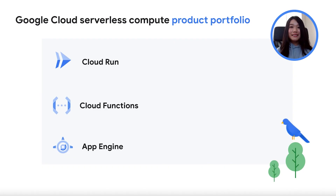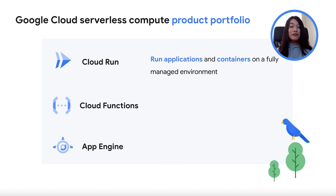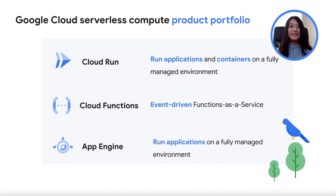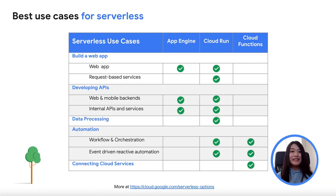Now that we have the basics sorted out, let me share with you how Google Cloud can help you to streamline your application development. First up, we have Cloud Run, which is really great for running any form of applications or containers in a fully managed environment. Next, we have Cloud Functions, which is definitely great for any event-driven applications. And last but not least, we have App Engine, which can also help to run applications in a fully managed environment. Here are some of the most common use cases compiled together to help you with your product decision making.